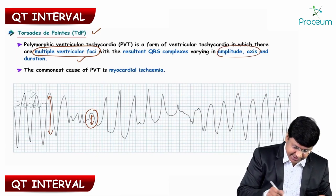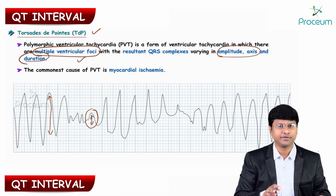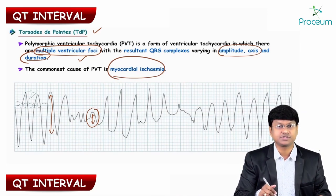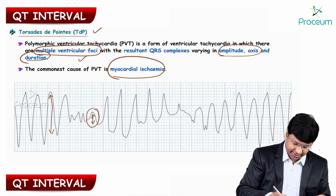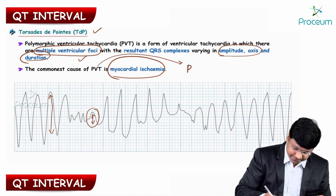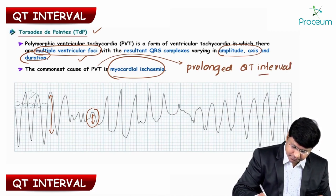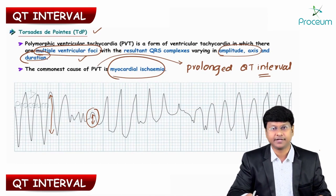There will be varying amplitude, axis, and duration. The commonest cause of polymorphic ventricular tachycardia is myocardial ischemia. Apart from myocardial ischemia, the other etiology for polymorphic ventricular tachycardia is prolonged QT interval — that is the other important etiology.